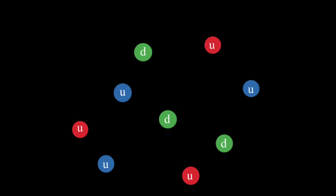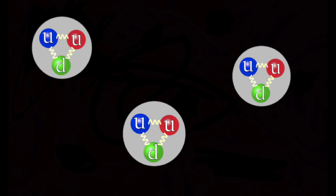Subatomic particles are any particles smaller than an atom, and there are a lot of subatomic particles. The particles are divided up into two different categories: elementary and composite. Elementary particles are the particles that make up everything in the universe. These tiny particles are indivisible, meaning they are not made up of any smaller particles — at least, scientists do not know what they are made up of. Composite particles are the larger subatomic particles; they are the particles made from the elementary particles.